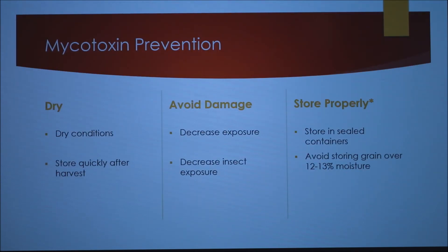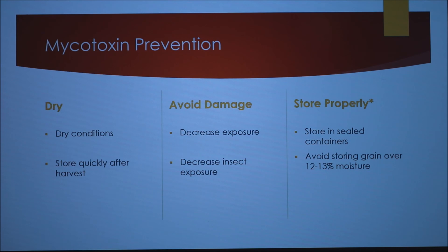There are a couple of ways to prevent mycotoxin contamination. Three of them are keeping your feed dry, avoiding damage to your feed, and storing your feed properly. These all lead to less moisture exposure, which leads to fungi contamination and growth, and eventually mycotoxin contamination of feeds. You want to store your feed quickly after harvest, decrease any insect exposure, and avoid storing grain over 12 to 13 percent moisture levels.